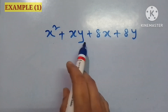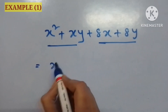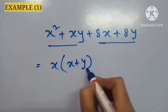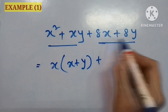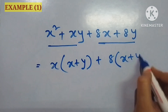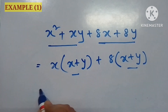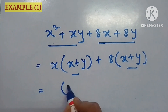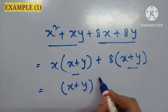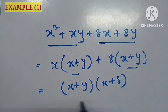In my first example, x squared plus xy plus 8x plus 8y, I have to do factorization by the grouping method. I am taking x common from the first two terms and 8 common from the last two terms. Here x plus y is common for both groups, and then I got the answer.